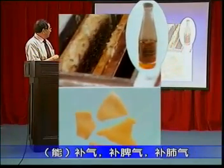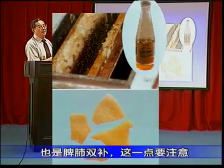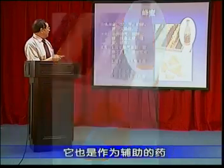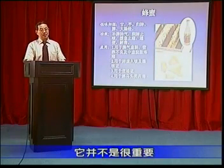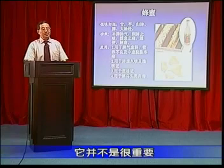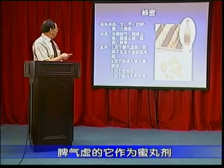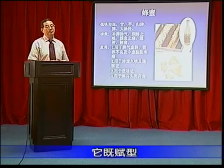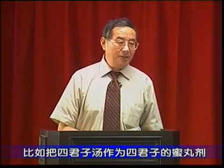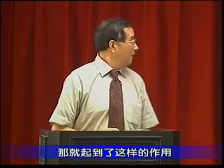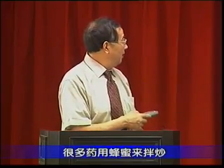接下来是蜂蜜，这也是一个食品。蜂蜜能补气，补脾气、补肺气，是脾肺双补的，这一点要注意。它也是作为辅助的药，不管脾气虚或者肺气虚，它并不是很重要。在古方里面，脾气虚的它作为蜜丸剂，既赋形又起补脾气的辅助治疗作用，比如四君子汤，作为四君子的蜜丸剂就起到这样的作用。治疗肺气虚的一些方，很多药炮制用蜂蜜来拌炒。